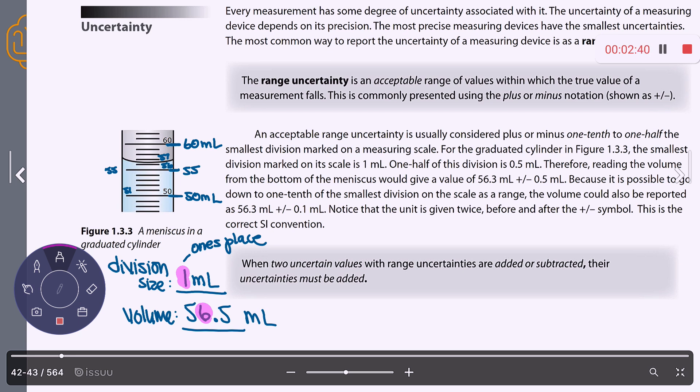Now I'm highlighting the six because I want to make you aware of the fact that whatever decimal place the division size goes to, so this division size goes to the one's place, so that means I have to give an estimated digit after that in the tenths place. If I didn't put this 0.5, I would be wrong. Does that make sense? If I fell on the line, you would have made this a 0.0. Follow me on that?